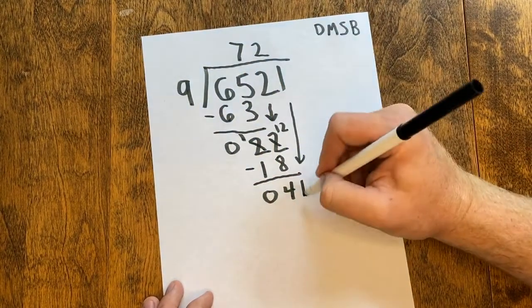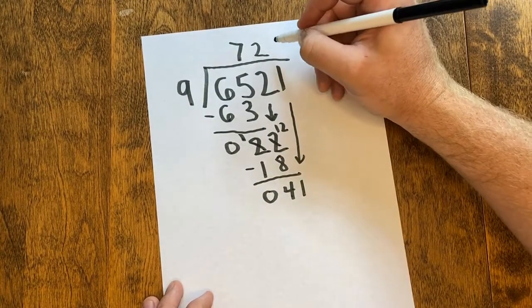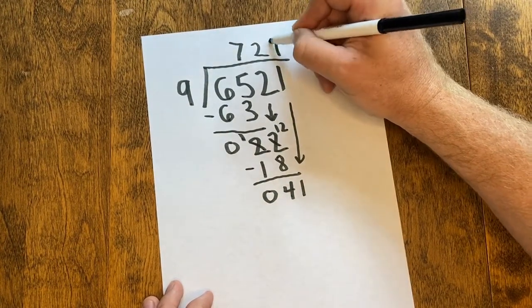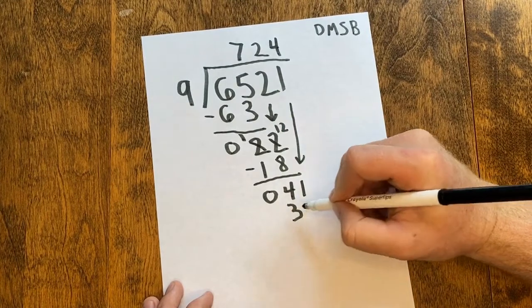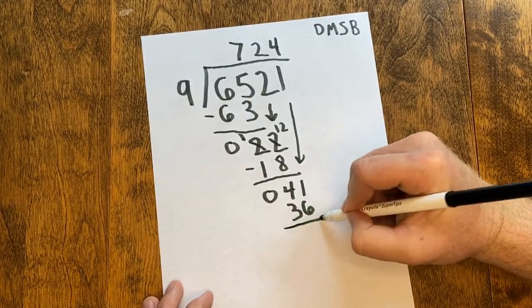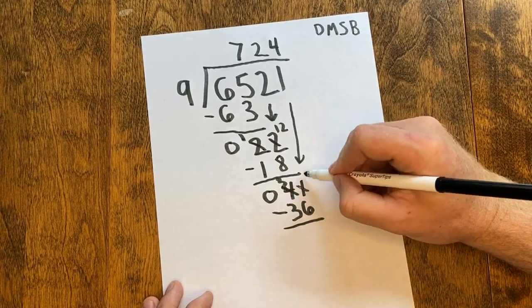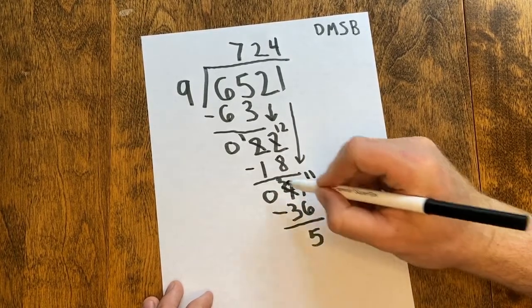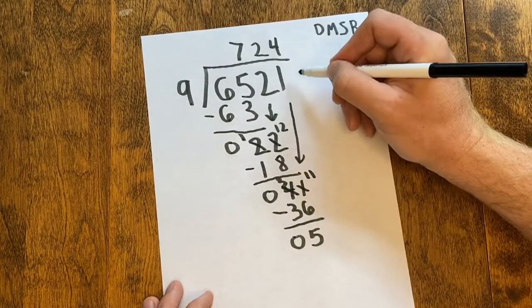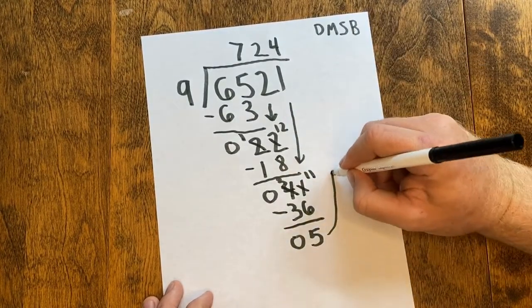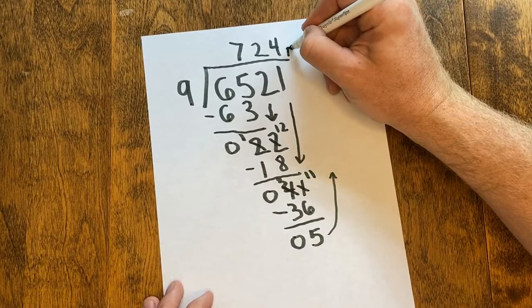9 goes into 41 four times, which is 36, and I subtract. I need to regroup. 4 changes to a 3, my 1 changes to an 11. 11 minus 6 is 5, 3 minus 3 is 0. I have nothing left to bring down, so my 5 comes up as my remainder.